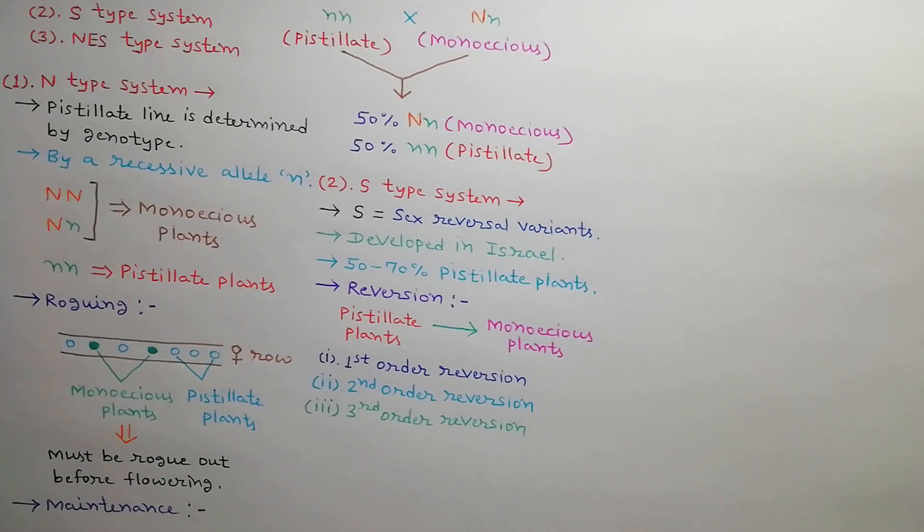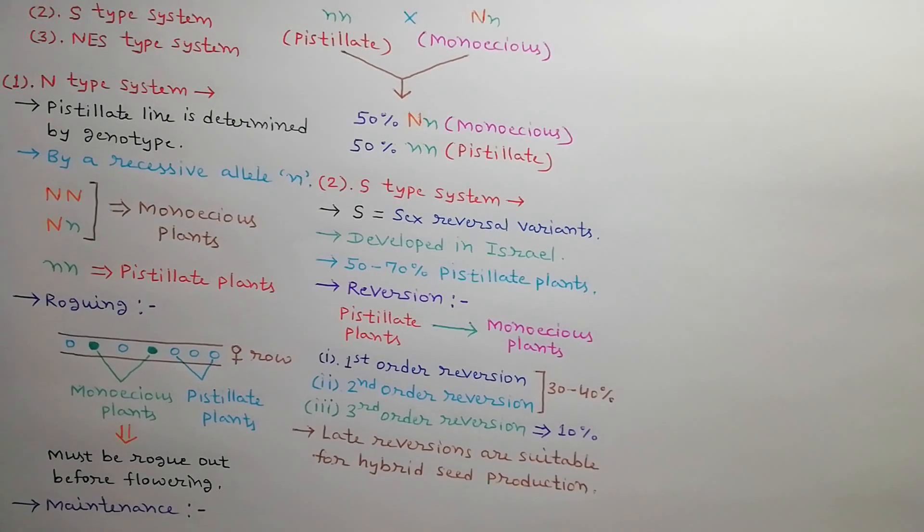Three main reversions take place: first order reversion, second order reversion, and third order reversion. In first two reversions, 30 to 40% plants revert into monoecious plants, while in third reversion only 10% plants revert into monoecious plants. Because 90% plants remain pistillate in late reversion, it is considered suitable for hybrid seed production.